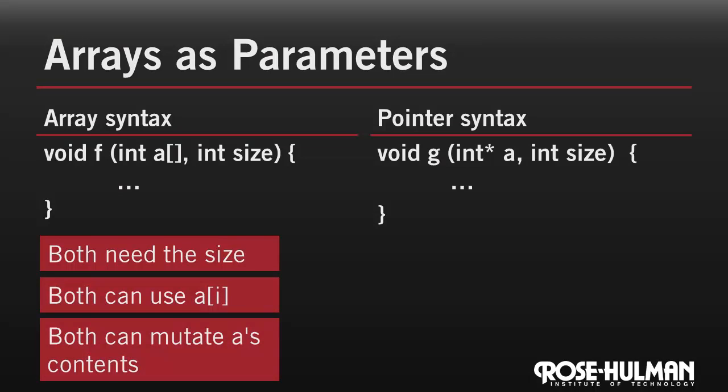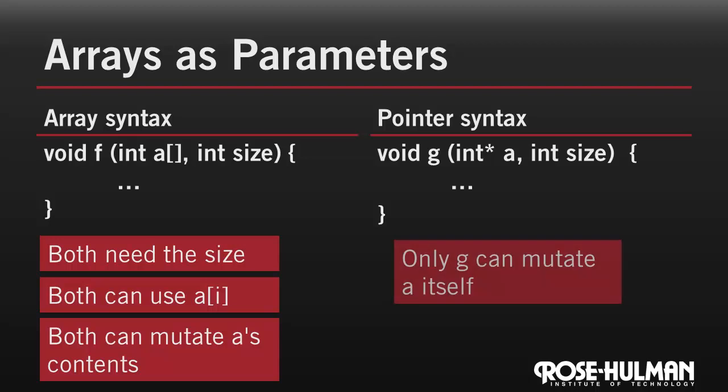But there is one very subtle difference. Only g can mutate the parameter a. With array syntax, you can't change a to walk through the array. So you need a separate pointer. Remember, array pointers are constant. But if you actually pass a in as a pointer, then you could in that case actually change a itself within the function by using pointer arithmetic to traverse the array. Not a huge deal, but that's that tiny little case, kind of like moving the refrigerator.